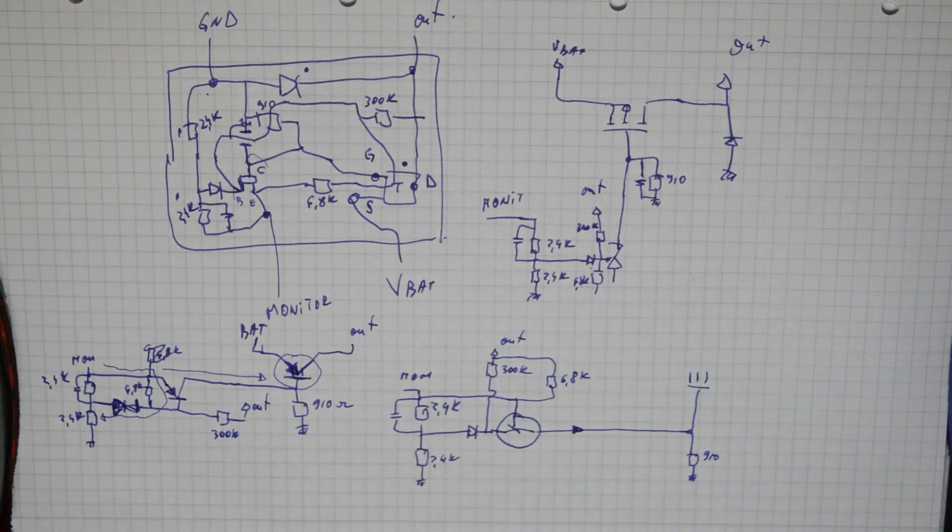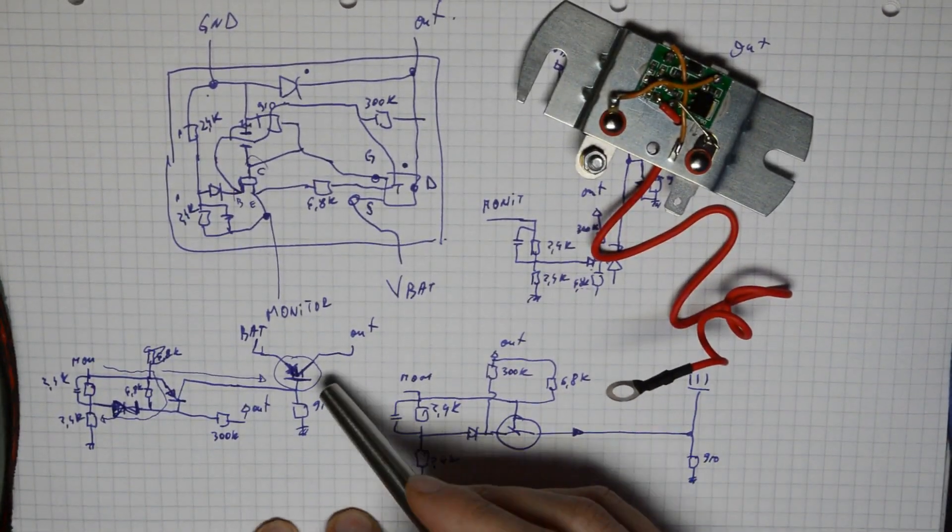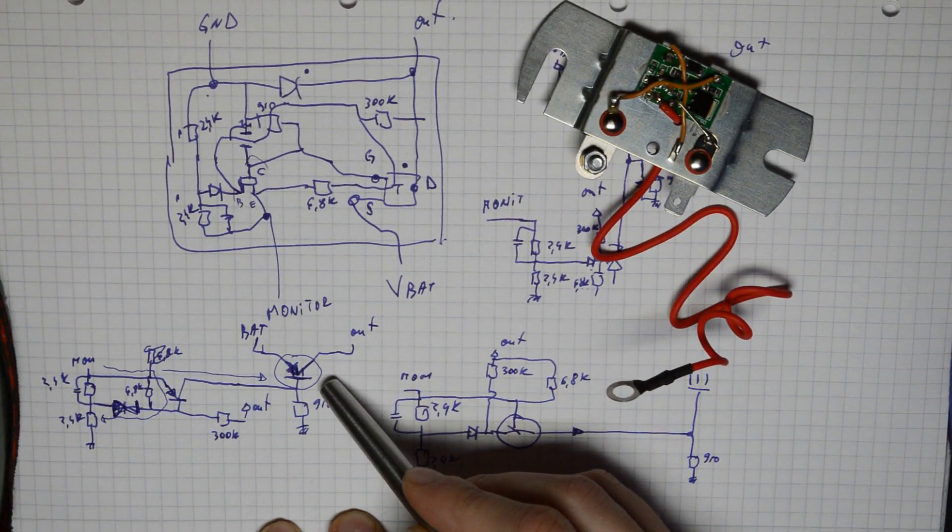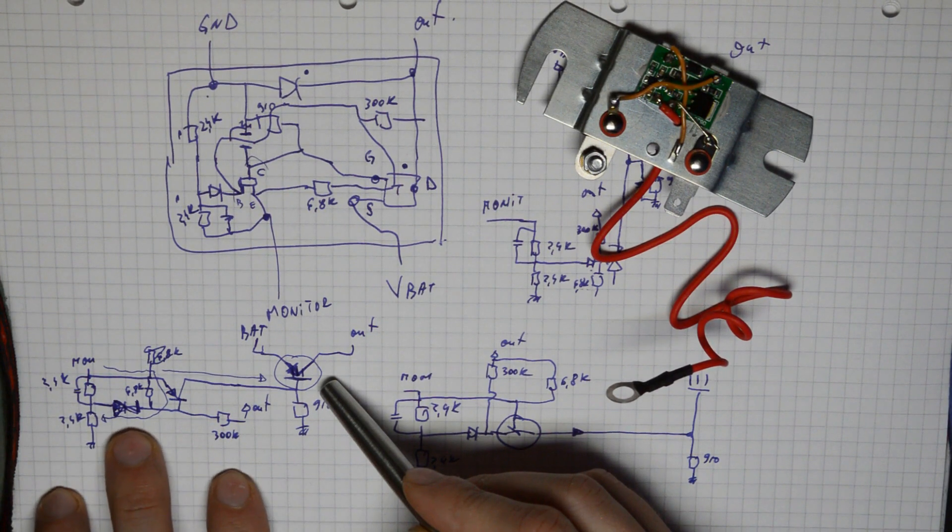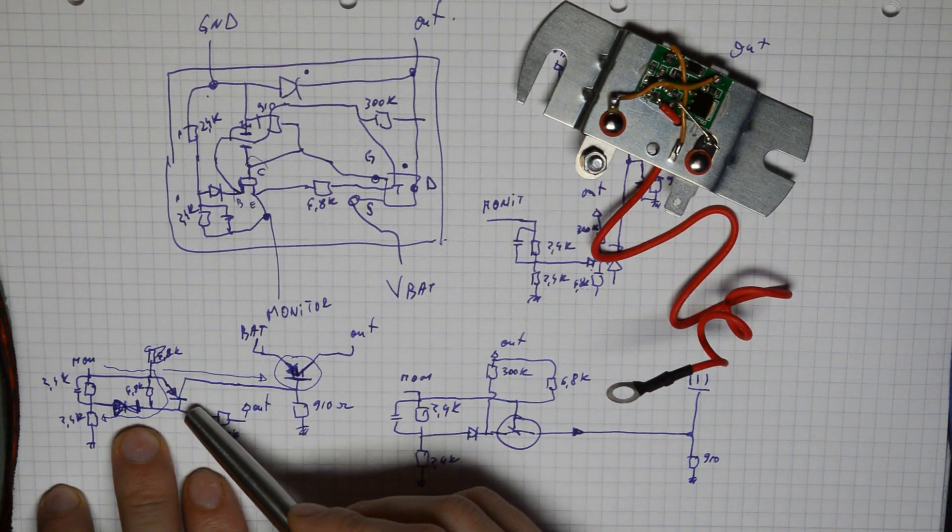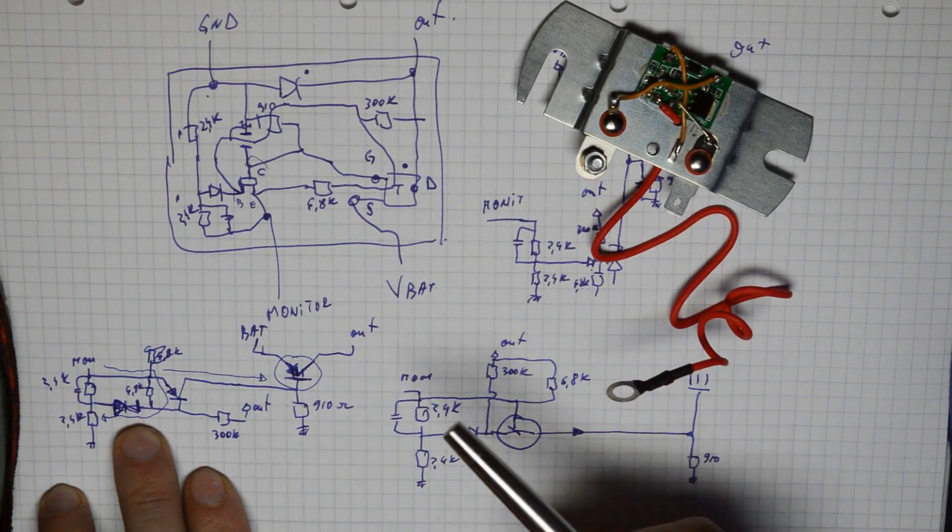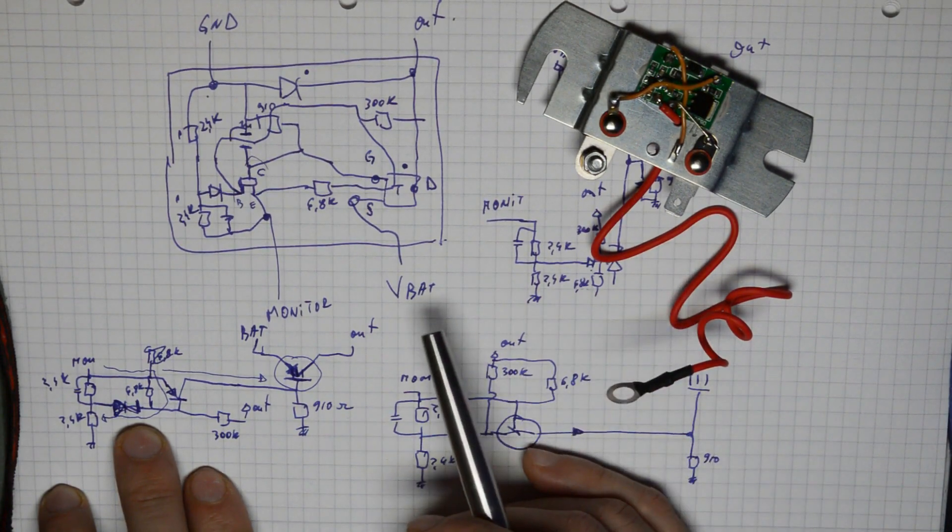So basically this is how this little thing works. Normally our output transistor is on, but when the voltage through the zener exceeds its threshold voltage, the second PNP transistor turns on, switching off the whole circuit and turning off charging of the battery.